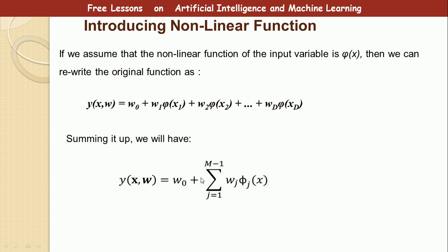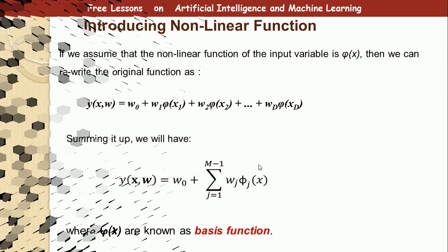So if we are now going to sum everything together, we simply take w0 plus j is equal to 1 to n minus 1, wj phi j of x. So it's all the same as what we have in the previous equation. Where phi of x, they are known as the basis function. So you now see where the name comes from: linear basis function model. Alright, I hope you've understood how it works.